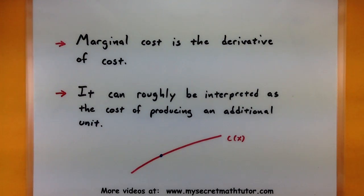So what marginal cost is, is essentially the derivative of the cost. So how is the cost changing, is it going up, going down, and by how much? Now often times you can roughly interpret the marginal cost as the cost of producing just an additional unit. And let me show you why that is.